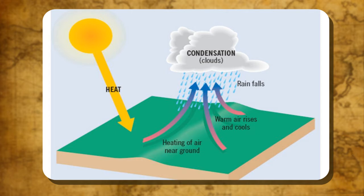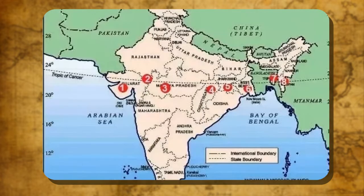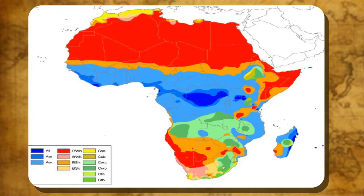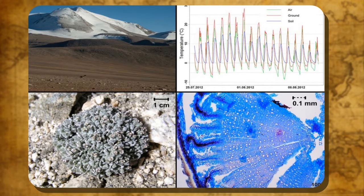India experiences the tropical monsoon type of climate. Factors affecting Indian climate — Latitude: India lies between 8 degrees north and 37 degrees north latitudes. The Tropic of Cancer passes through the middle of India; while the southern part lies in the tropical zone, the northern part falls in the subtropical zone. Thus, except in the areas of high altitudes, the temperature remains quite high during summer season all over the country. But during winter, temperature falls considerably in the northern plains.